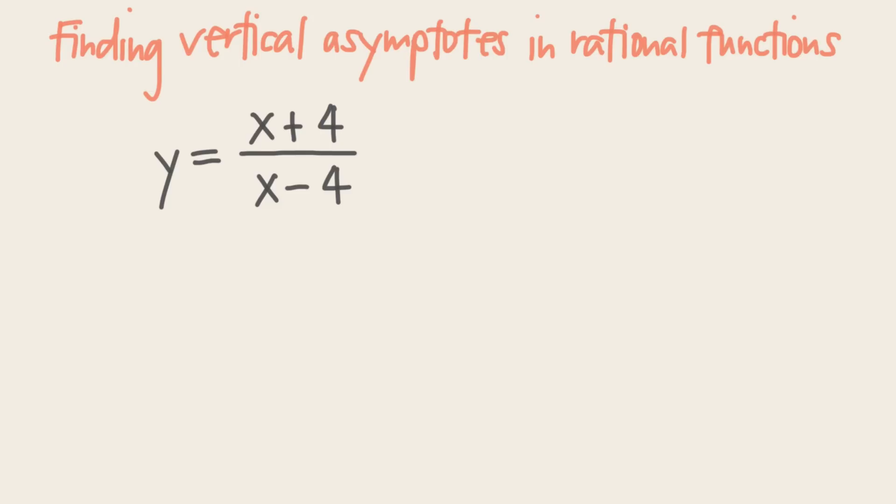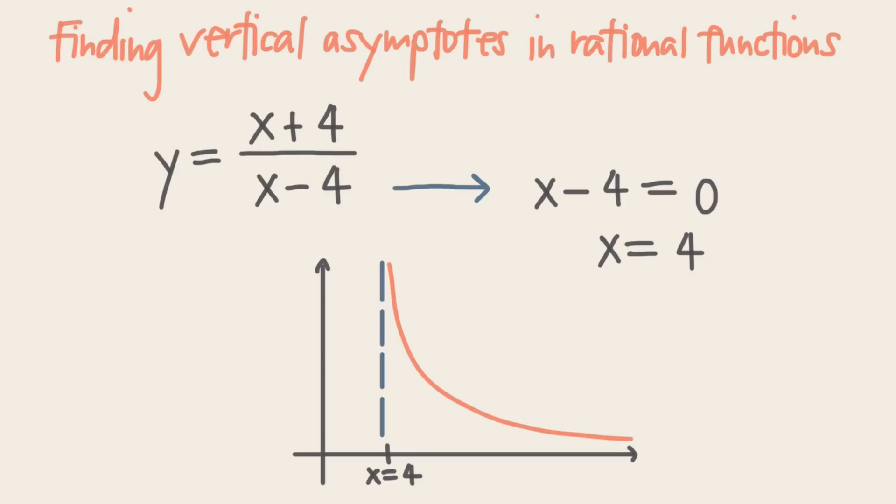So if we're given a rational function, how do we actually find any vertical asymptotes that it might have? We can find any vertical asymptotes by setting the denominator equal to 0 and then solving for the variable. In this case, we'd find that x equals 4, so there's a vertical asymptote along the line x equals 4 on the graph.